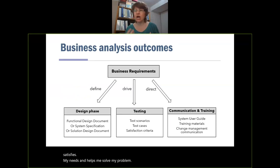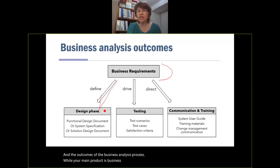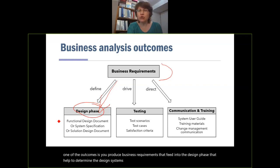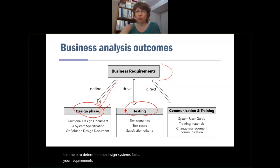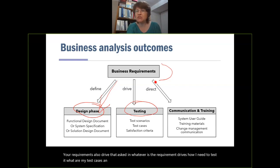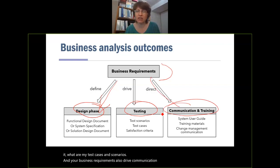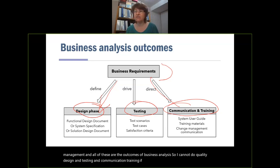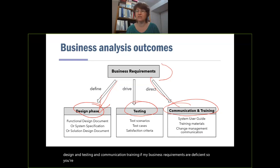The outcomes of the business analysis process — your main product is business requirements, which influences everything else. Your requirements feed into the design phase and help determine design and system specs. Requirements also drive testing — whatever is the requirement drives how I need to test it and what are my test cases and scenarios. Business requirements also drive communication, training, and change management. You cannot do quality design, testing, and communication training if your business requirements are deficient. You are really upstream from all the other activities on the project.